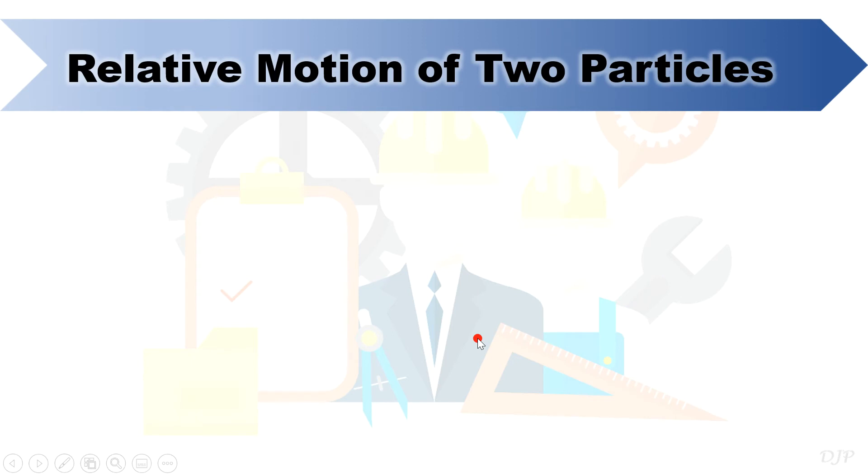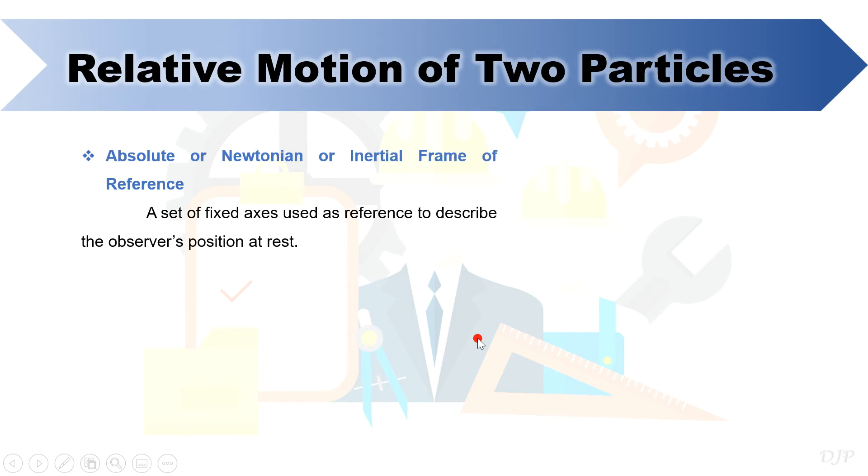Usually, a moving body is observed by an observer who is at rest. Commonly, the position of the observer is denoted as the reference during the analysis of motion of the observed particle or object.